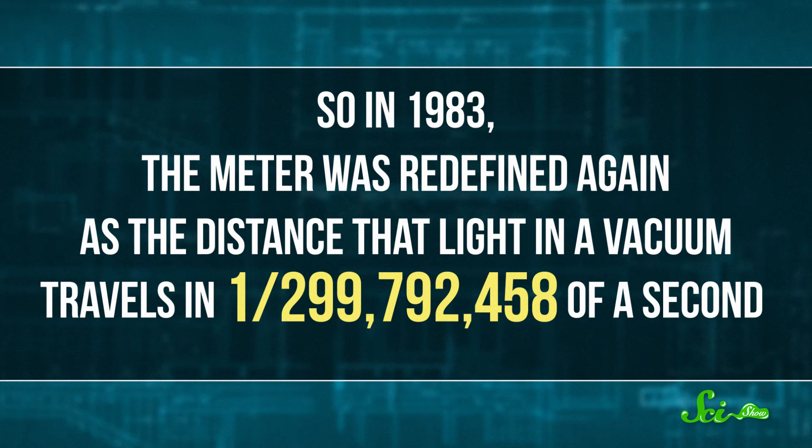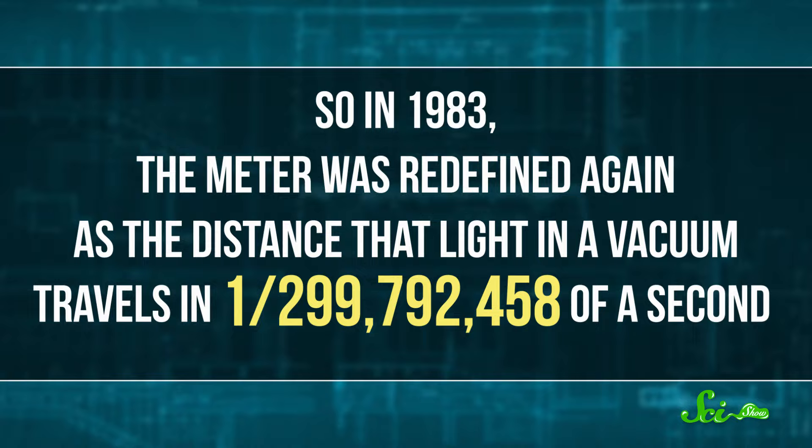But we didn't stop there. As our understanding of light grew, and we could measure it more and more precisely, we realized that there was an even more fundamental way to define the meter. See, the speed of light in a vacuum is constant, no matter your reference frame. Our current understanding is that the speed of light is one of the most fundamental quantities in the universe. So in 1983, the meter was redefined again as the distance that light in a vacuum travels in 1/299,792,458th of a second. And we're pretty sure that's about as fundamental as you can get.